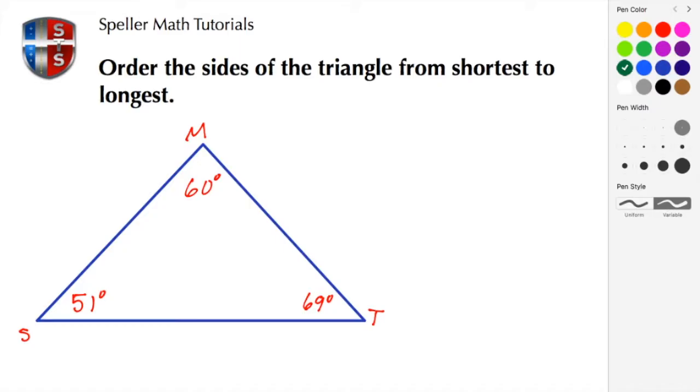Here we have a triangle labeled SMT, and SMT has angles with the measures of 51 degrees, 60 degrees, and 69 degrees. We're tasked to label the sides from the shortest side to the longest side.